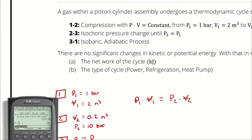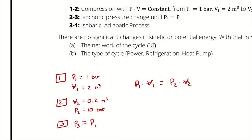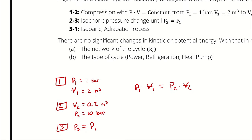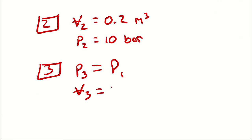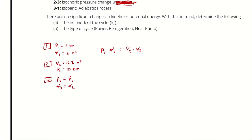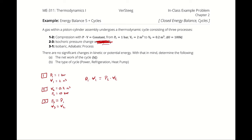The process from 3 to 1 is isobaric, so P3 equals P1, which I had already noted. The process from 2 to 3 is isochoric, meaning constant volume from 2 to 3, so V3 equals V2. I now know pressure and volume at all three state points, and I know how pressure and volume are related for all three processes.